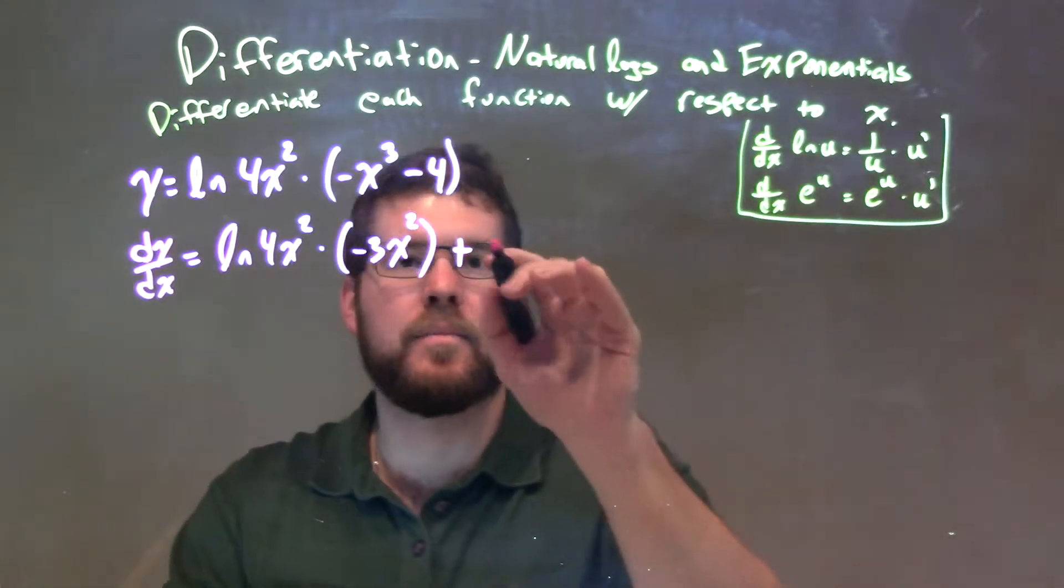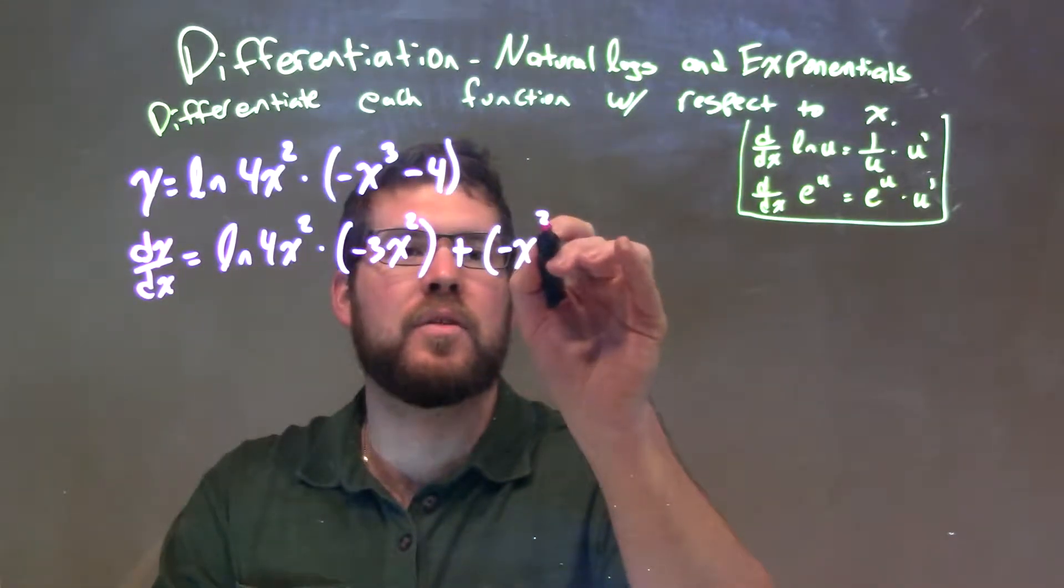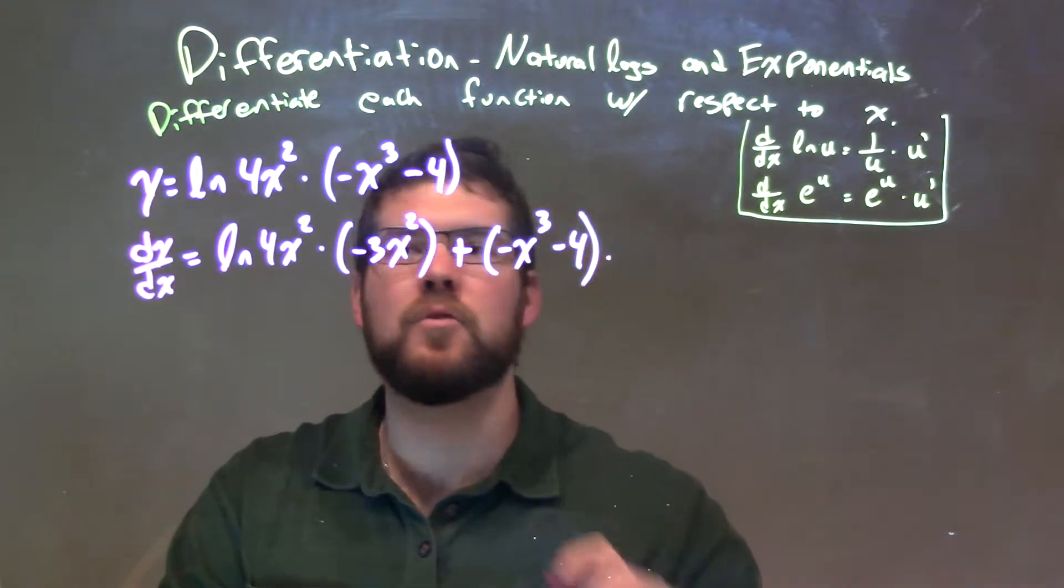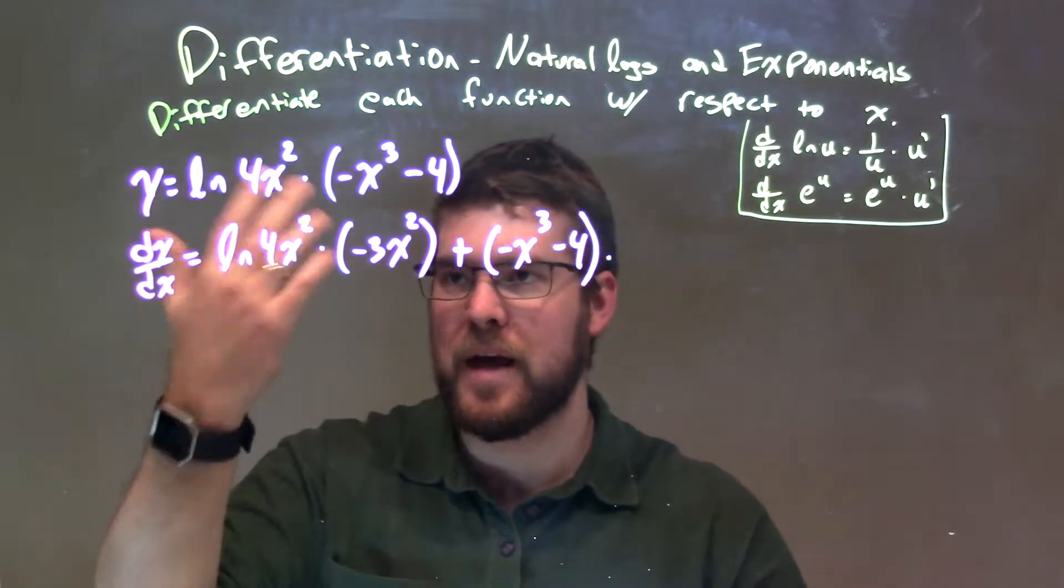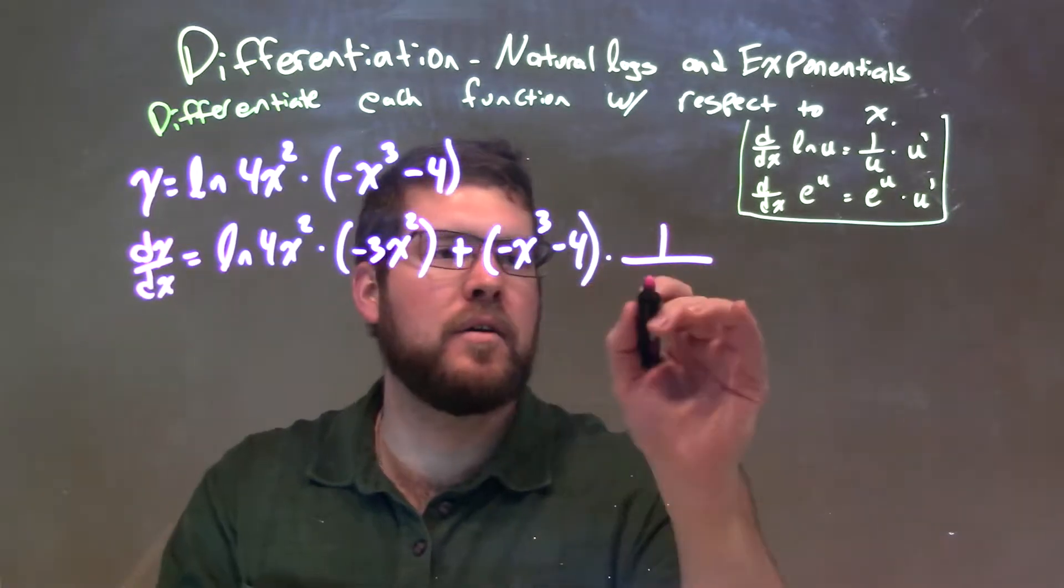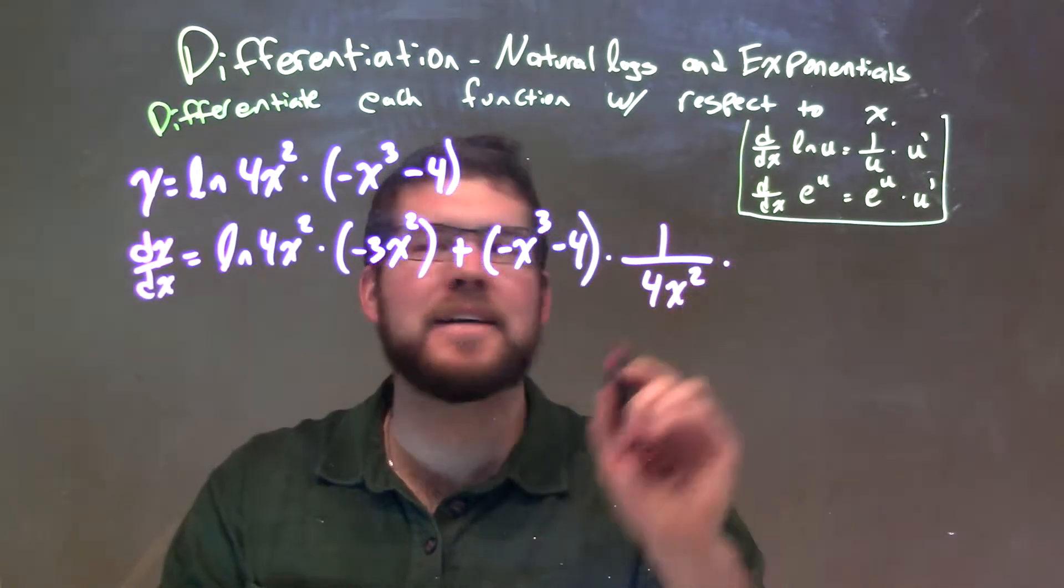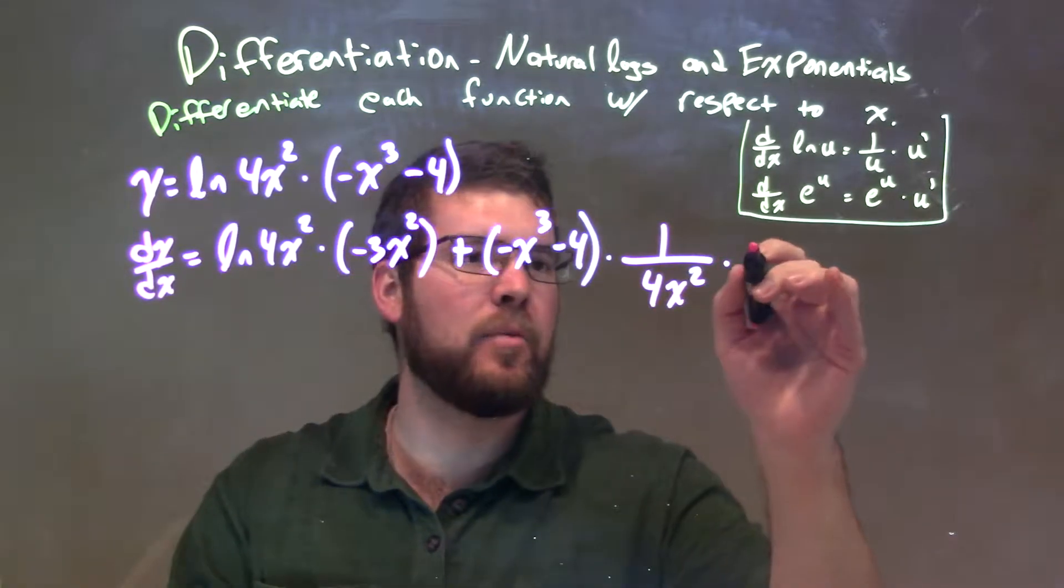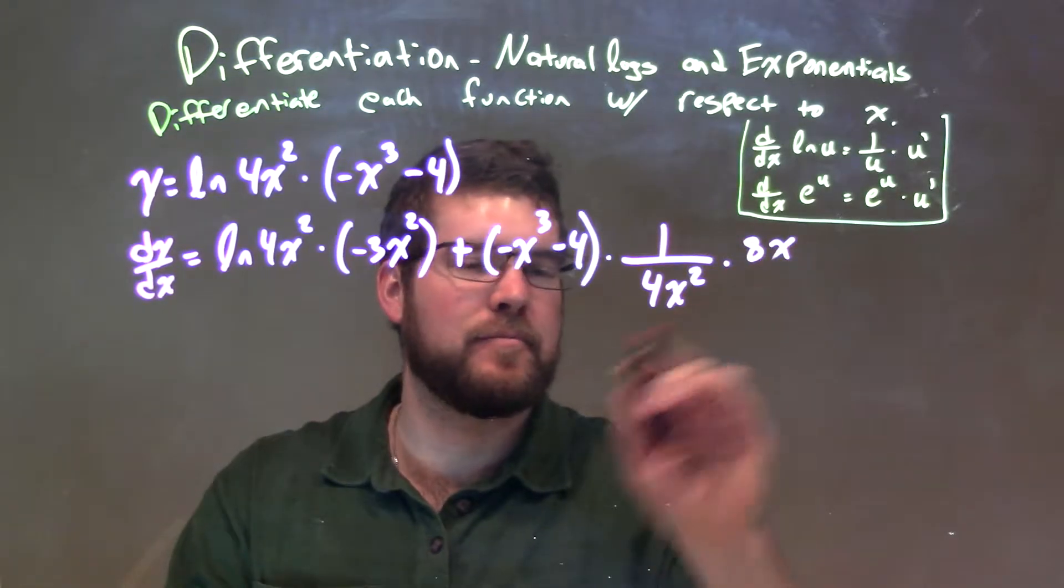Plus, now, the second part, negative x to the third minus 4, times the derivative of the first part. The derivative of natural log of u is 1 over u times u prime. So, we have 1 over, what's on the inside? 4x squared times the derivative of the inside, power rule 8x, right there.